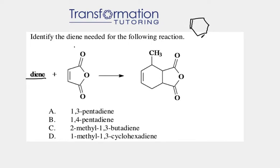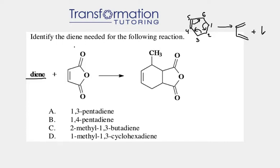Generally when we have a cyclohexene, my arrows can go this way. I'm going to number it — you can number it any way you want, but you can follow my numbering. This is how I always number it, and when we do a reverse Diels-Alder we always get a diene and a dienophile. We number: 1, 2, 3, 4, 5, and 6. So when we do the reverse Diels-Alder on a cyclohexene, we get a diene and a dienophile, and this is how they're numbered.